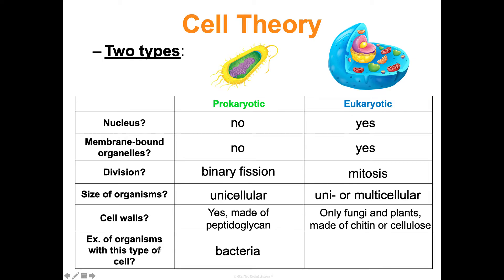Examples of organisms: bacteria are prokaryotes, and everything else — fungi, plants, animals, protists — falls under eukaryotes. That distinction is really important to remember.